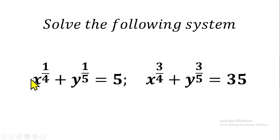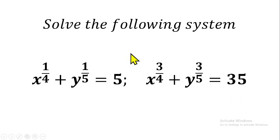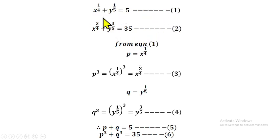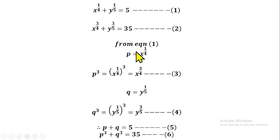What we can do is call x raised to the power one over four another variable. Let's call it p. So if p equals x raised to the power one over four, we can then take the cube of both sides. Cubing p gives p cubed, and cubing x to the power one over four gives x to the power three over four, by the law of indices — since one over four multiplied by three gives three over four.